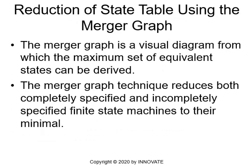Reduction of state tables using the merger graph. The merger graph is a visual diagram from which the maximum set of current states can be derived. The merger graph technique reduces both completely specified and incompletely specified finite state machines to their minimum.